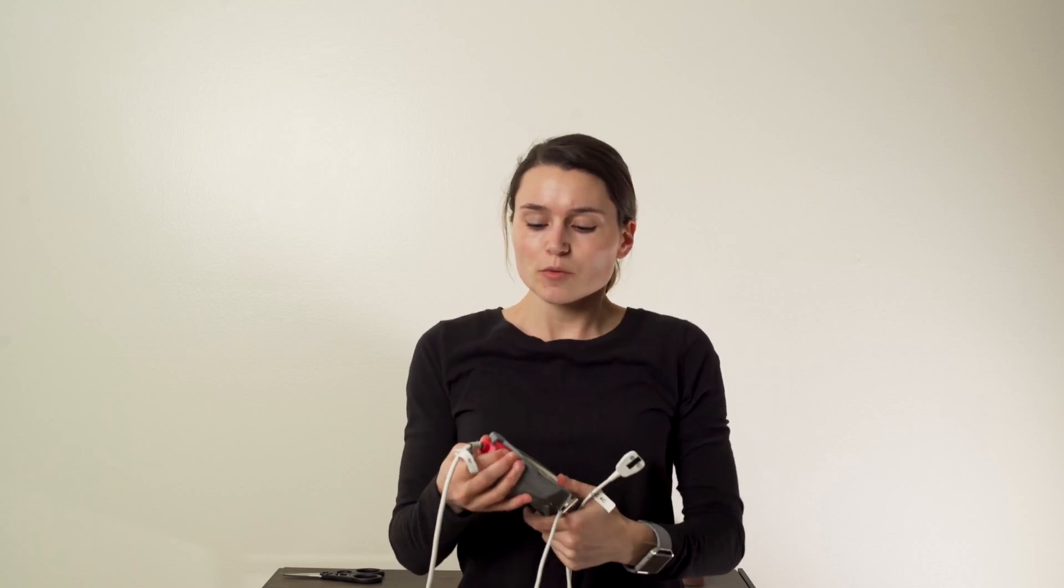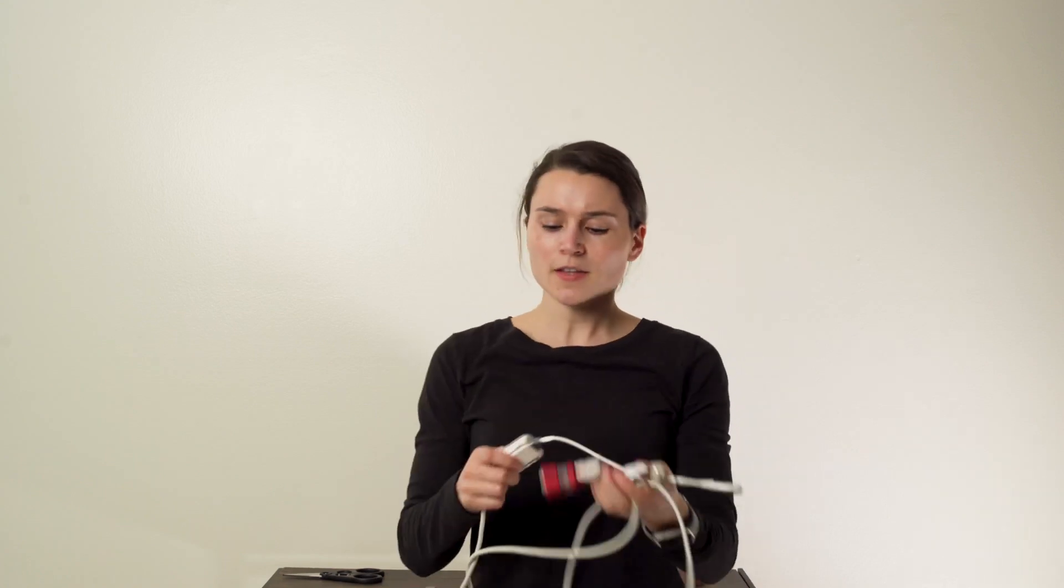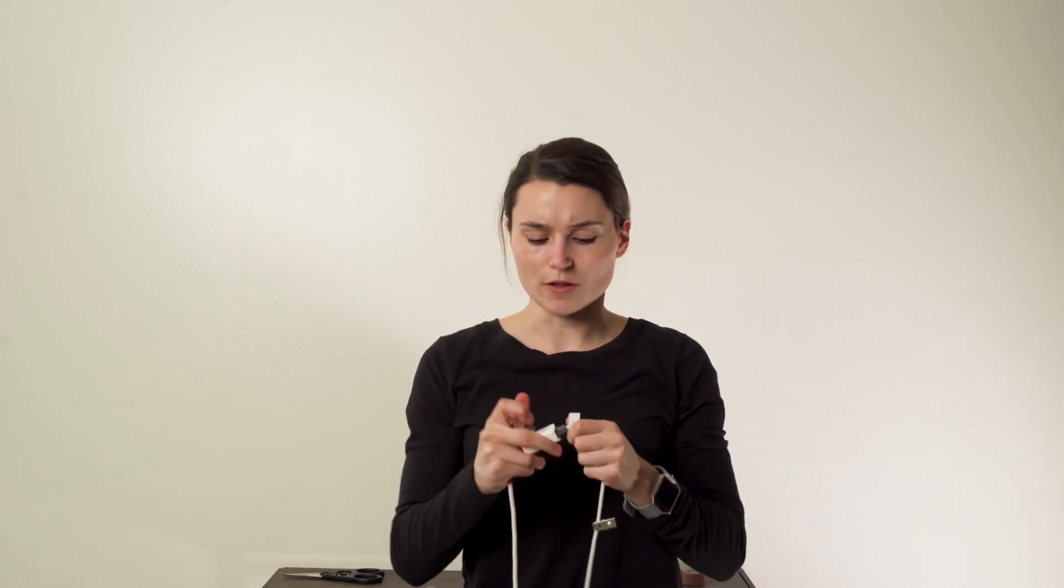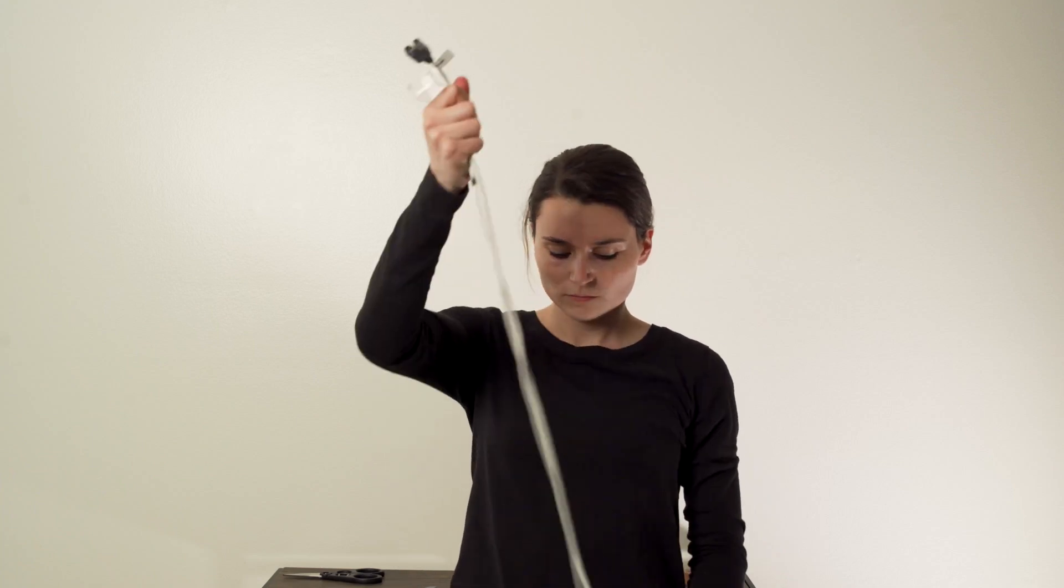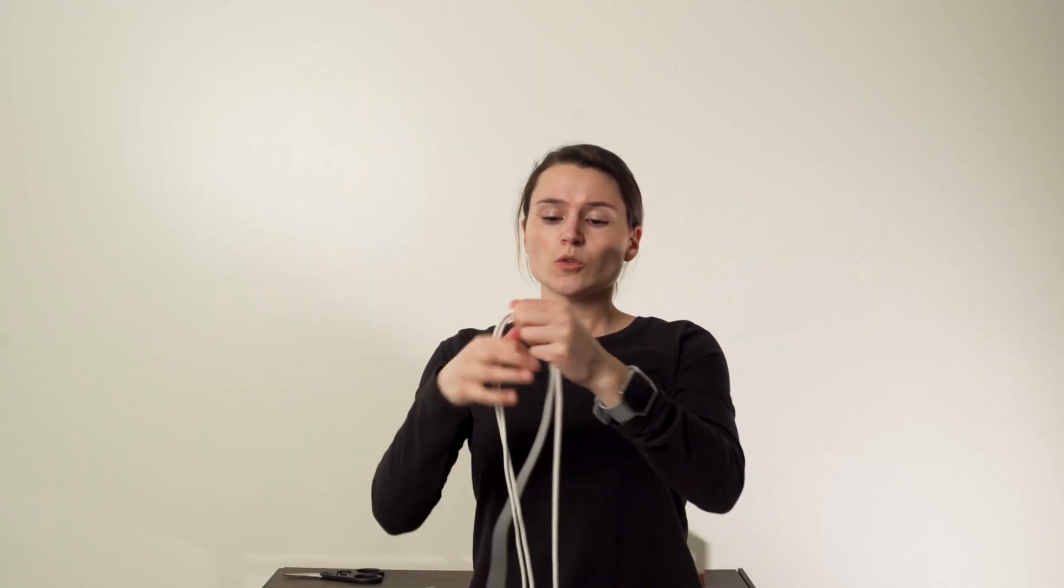For storage, remove the cord from the pulse oximeter, then detach the two cords from one another. Store the cords on a hook, on the wall, or in a cabinet.